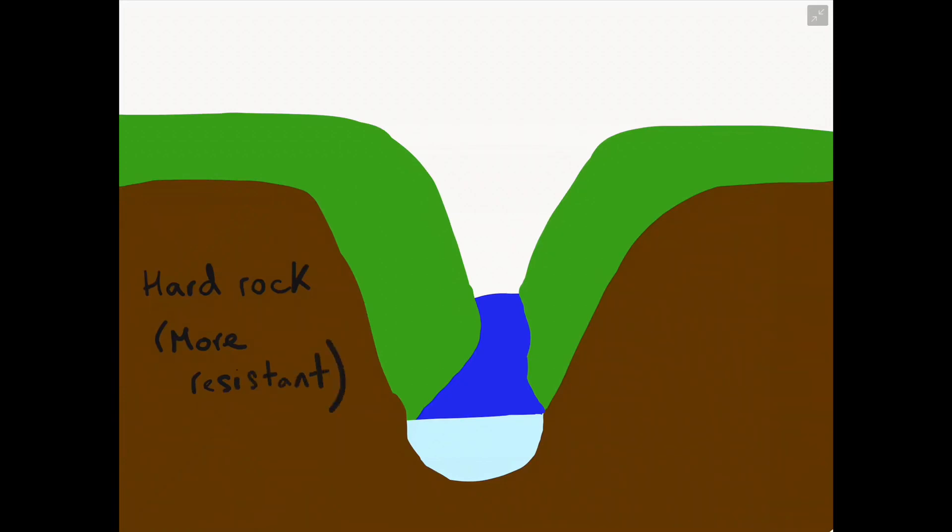Freeze-thaw weathering takes place in this particular part of the long profile of the river. This is where water gets into cracks between the rocks and freezes at night, expanding those cracks and then thawing or melting during the day. Over time, this process makes the river channel become wider, giving the valley a steep V-shaped cross profile.